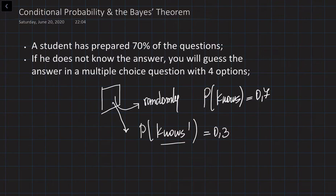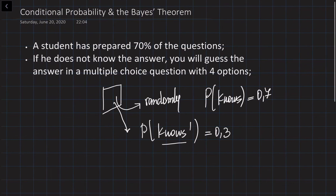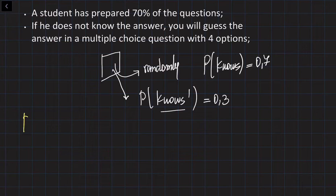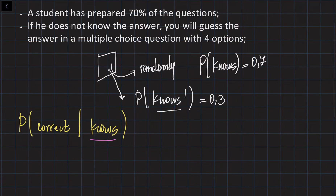So if the student knows this question, he's going to answer correctly. The probability that the student is going to answer the question correctly, if he knows the question — this is called the conditional probability, where the event after the vertical line has already happened. We know that the student has picked up a question which he knows, and the probability that he's going to answer correctly is equal to 1, because he knows this question.